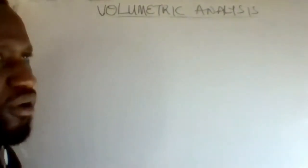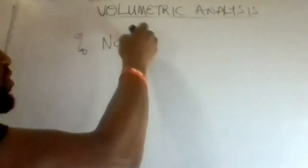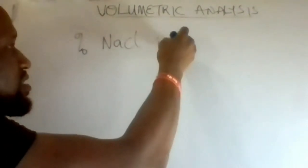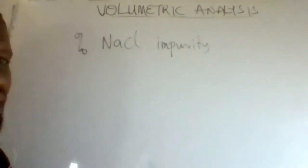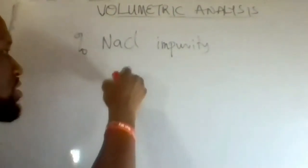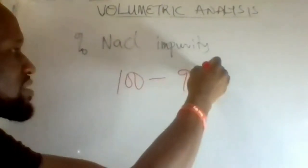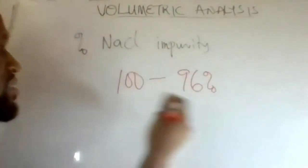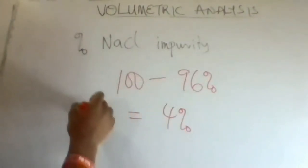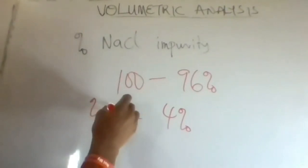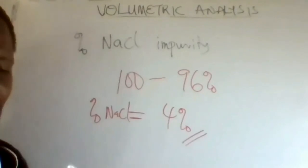Therefore, what is the percentage of sodium chloride impurity? The percentage of sodium chloride impurity equals 100% minus 96% of sodium hydroxide, which gives 4%. The percentage of sodium chloride impurity is 4% in the mixture.